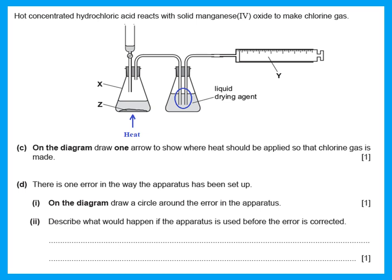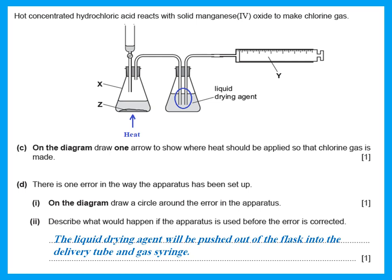Describe what would happen if the apparatus is used as it is before the error is corrected. As it is, the reaction will give out chlorine gas, the chlorine gas will bubble into the liquid drying agent, and this will push the liquid out through the delivery tube into the gas syringe. I don't want that — I want only the chlorine gas to go into the syringe, not the liquid drying agent.